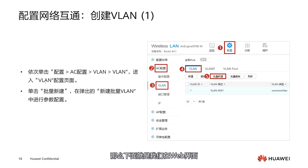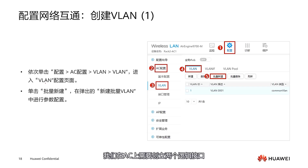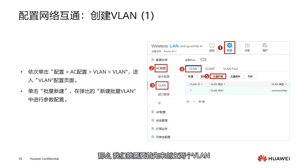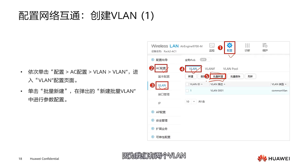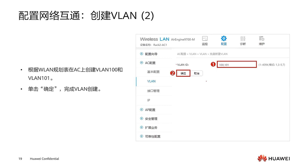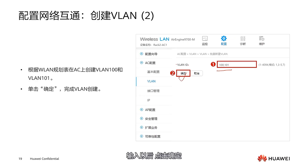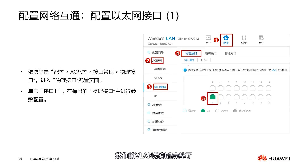Now let's move on to the specific configuration in the web interface. First, we need to establish VLANs on the AC. We need to create two logical VLAN interfaces on this AYC, so we first establish two VLANs. Enter the configuration, then click on AC configuration, and in the VLAN option, we can enter the specific configuration interface. Click VLAN, then select batch create. Since we have two VLANs, batch creation can be used. Enter 100 and 101, separated by commas, then click OK. Our VLANs have been created successfully.